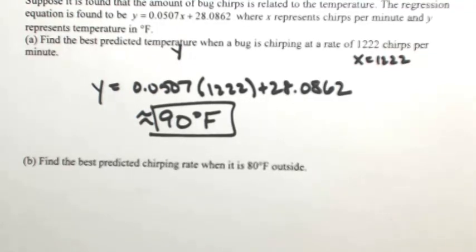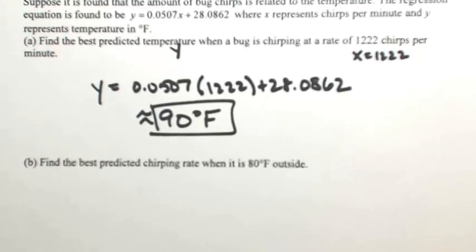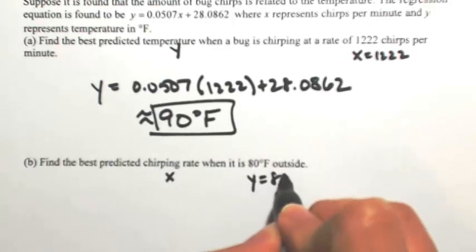Okay, so let's say you're given the temperature. So we want to find the best predicted chirping rate. So we want to find the best predicted x when you're given the y, which is 80.